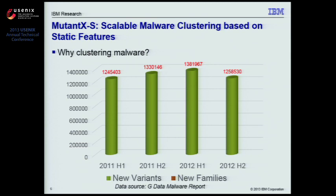Usually only a minor change has been made across variants. For example, according to the GData malware report, in the second half of 2012, there were more than 1.2 million new malware variants, but there were only fewer than 2,500 new families.